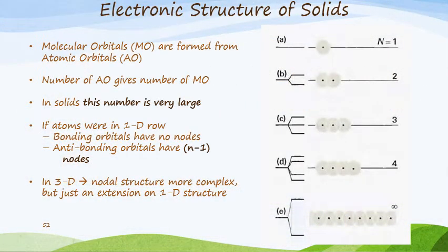This is the last part of the unit on structures of simple solids, where we're going to look specifically at the electronic structure of solids. We're going to use the molecular orbital approach to try and understand what is happening in solids, the movement of electrons, and why metals conduct electricity.